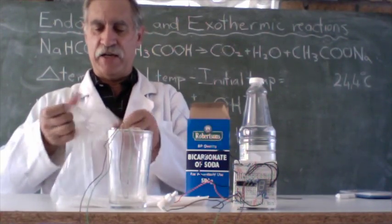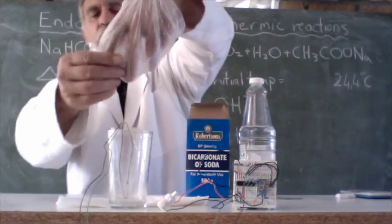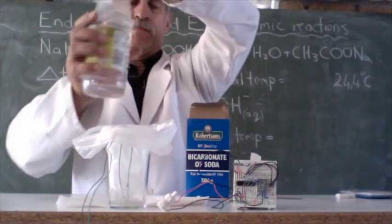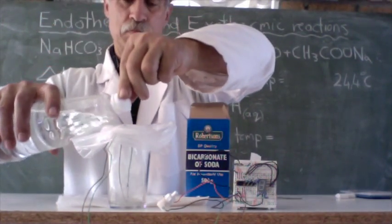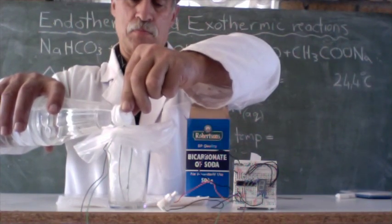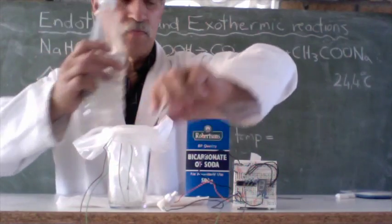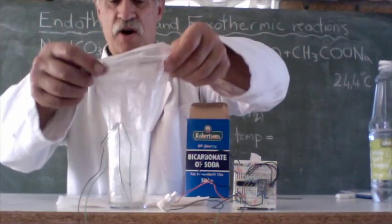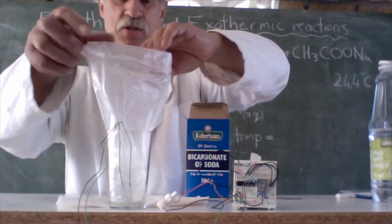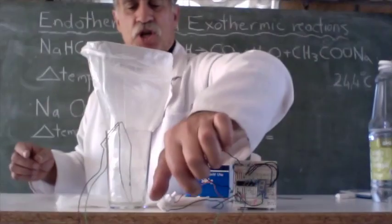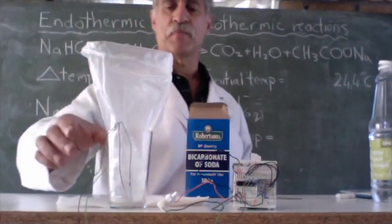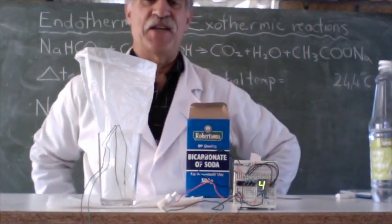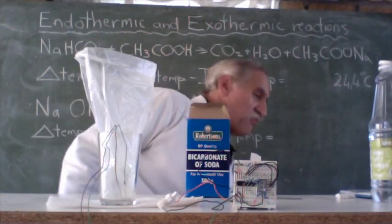We'll put our vinegar into the glass. So this is just to protect our little thermistor. Pour in some vinegar. So our glass is half empty or half full, depending on whether you're an optimist or a pessimist. Let's switch on our thermometer and it'll take a while to settle down.